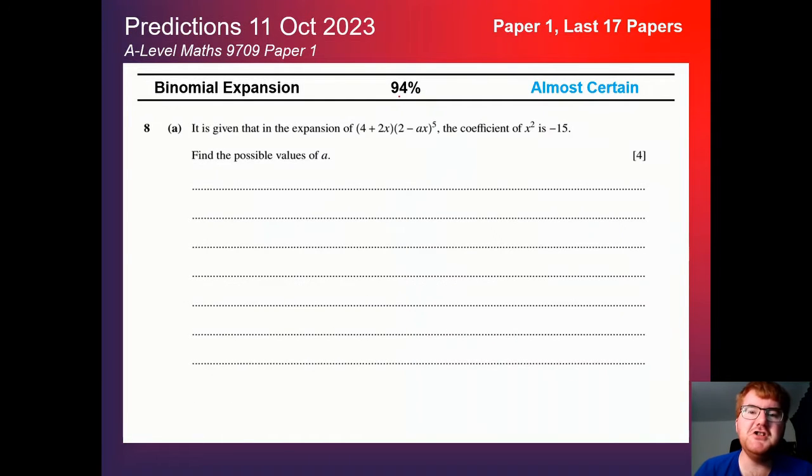On to the binomial expansion at 94%. So we can pretty much say that this is going to be certain to appear in some way. Put a more difficult question up on here. So question eight. So being aware of how to work with two brackets, as well as the binomial expansion as well, is a very important skill. Again, if you want to review your work on this, then do check out the video above as well.